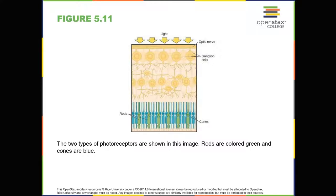We're not consciously aware of our blind spots for two reasons. First, each eye gets a slightly different view of the visual field. Therefore, the blind spots do not overlap. Second, our visual system fills in the blind spot so that although we can't respond to visual information that occurs in that portion of the visual field, we're also not aware that information is missing.